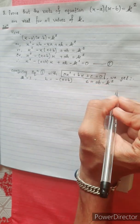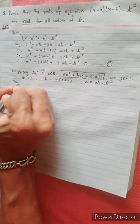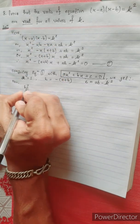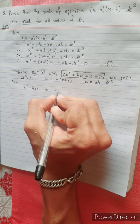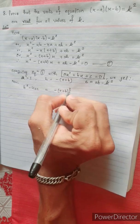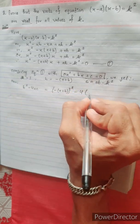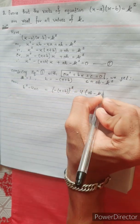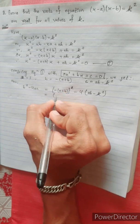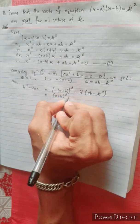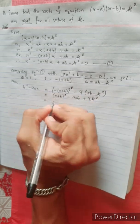Now, for real values of k, we are going to take the discriminant: b square minus 4 a c. Substituting: b value is minus (a plus b), so b square minus 4 a c equals minus (a plus b) whole square minus 4 times 1 times (a b minus k square).